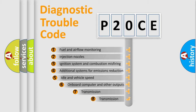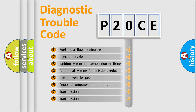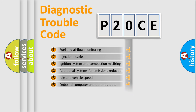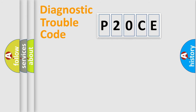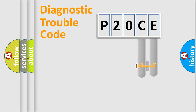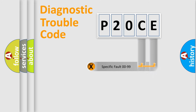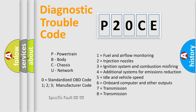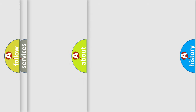The third character specifies a subset of errors. The distribution shown is valid only for the standardized DTC code. Only the last two characters define the specific fault of the group. This division is valid only if the second character code is expressed by the number zero.